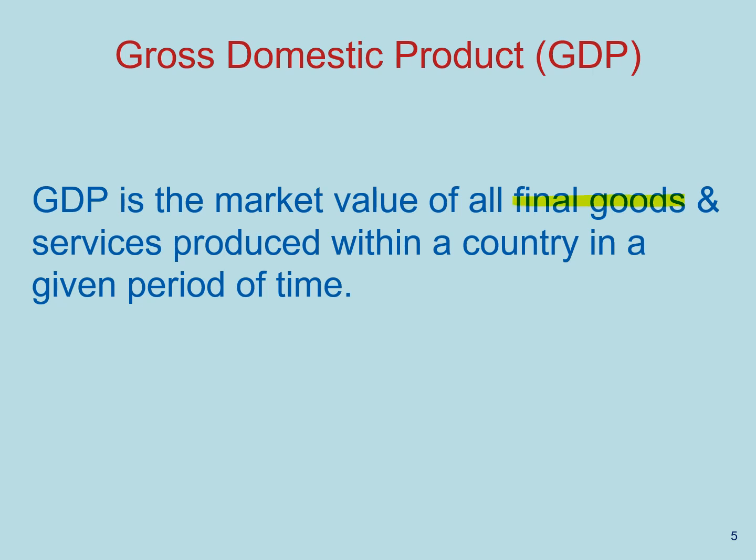Let's think about this concept of final goods and services. Final goods and services are those that are sold to the ultimate user. There are lots of products that are being bought as inputs in the production of other goods. If we were to count both the transactions of intermediate goods and their value in the sale of the final product, we would be double counting that economic activity. So in order to avoid double counting, we only look at the value of final goods and services, which encompasses all the economic value in intermediate goods.